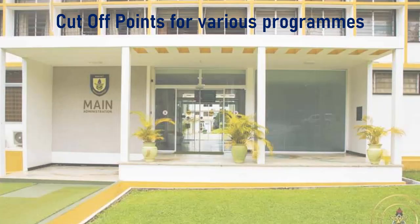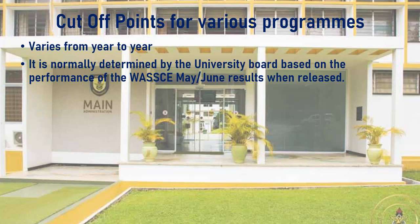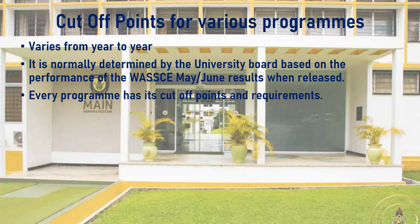The cut-off point system at the University of Science and Technology varies from year to year — it is not fixed. It is normally determined by the University Board based on the performance in the WASSCE May/June results. A new cut-off point is set every year after WAEC releases its results. Every program has its own cut-off point requirement. For instance, Aerospace Engineering had a cut-off of aggregate 9 last academic year, with an additional requirement of at least B3 in integrated science if chemistry is not taken as an elective. Fee-paying also has its own cut-off points.